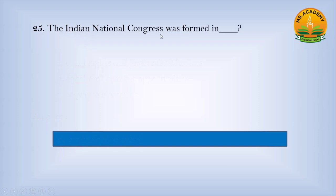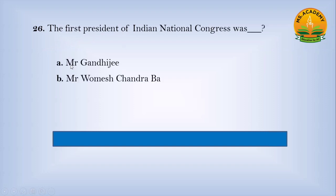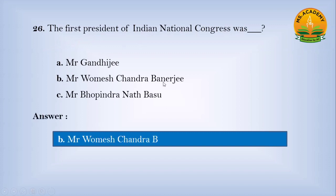The Indian National Congress was formed in: Option A, 1900; Option B, 1885; Option C, 1890. Answer: B — 1885. The first President of the Indian National Congress was: Option A, Mr. Gandhiji; Option B, Mr. Womesh Chandra Bonnerjee; Option C, Mr. Rabindranath Basu. Answer: B — Mr. Womesh Chandra Bonnerjee.